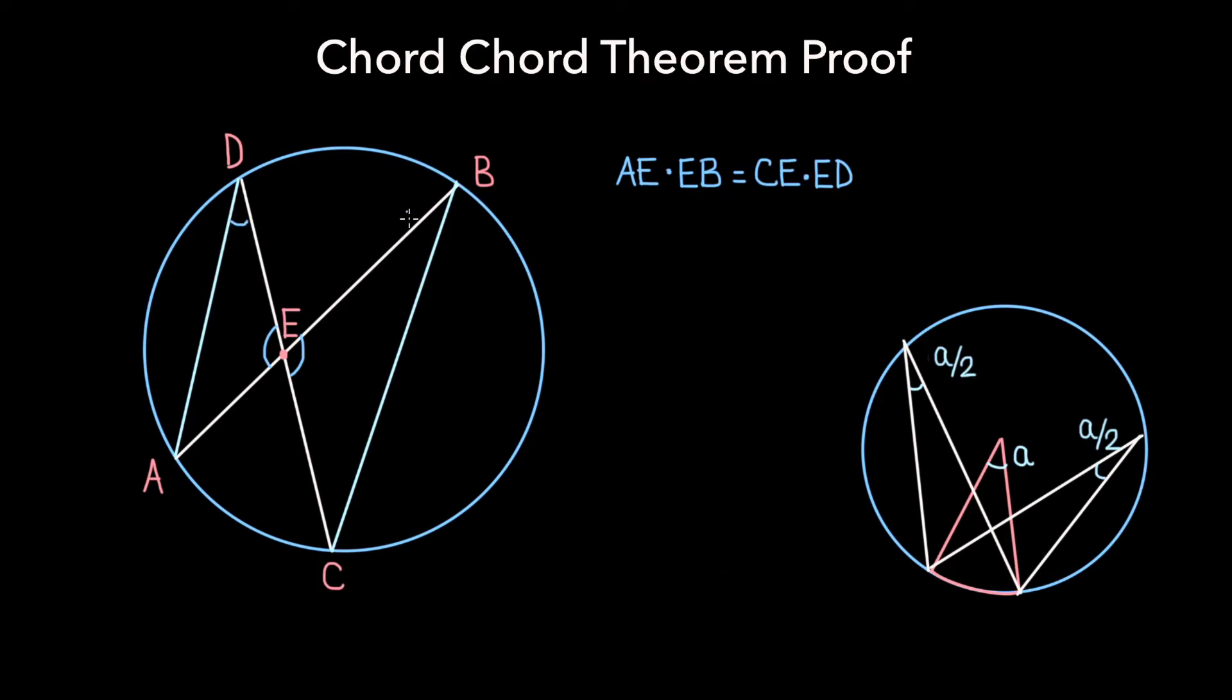This means that the angles formed at points B and D must be equal, because they are both subtended by the arc AC, and let's call these angles X.